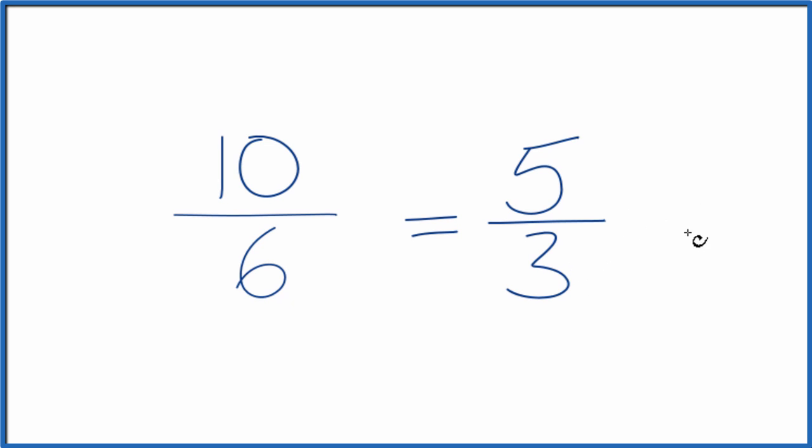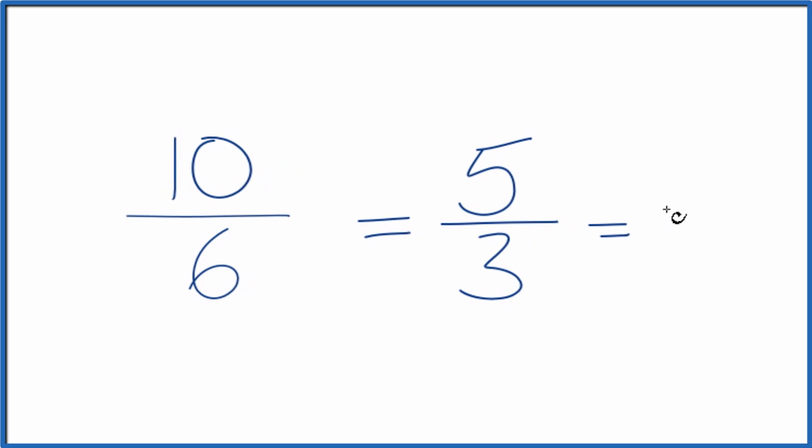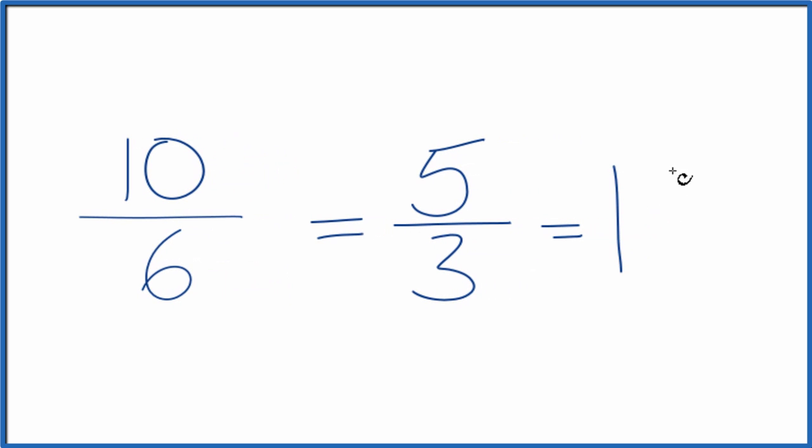Let's do that. So 3, that goes into 5 just one time with 2 left over, and we just bring the denominator across, and 5 thirds, that improper fraction, equals the mixed number 1 and 2 thirds.